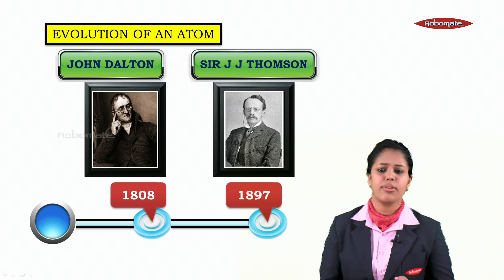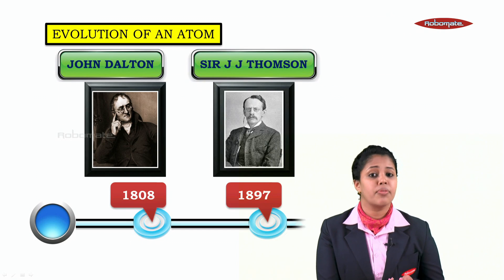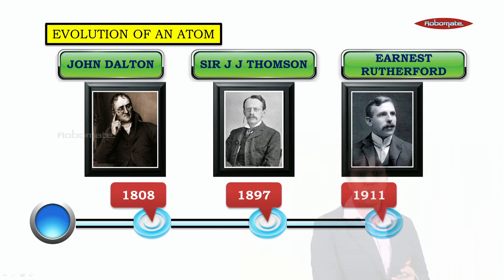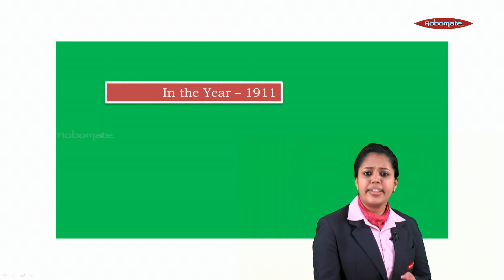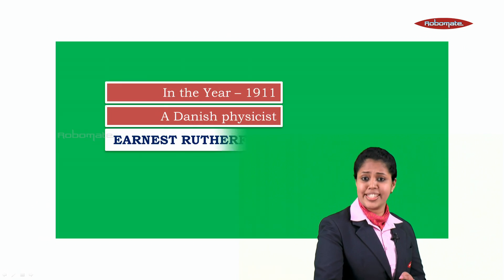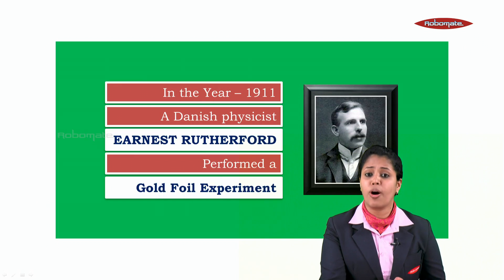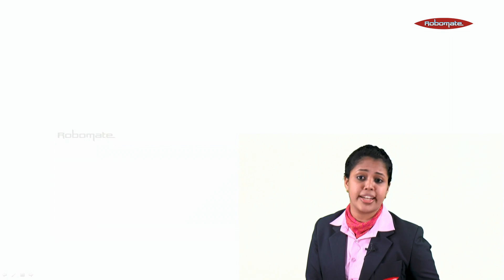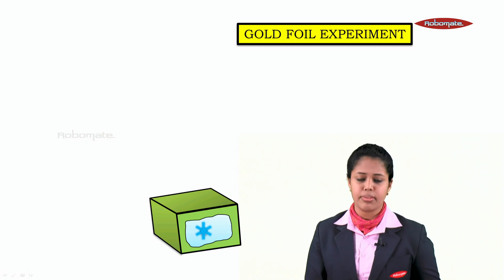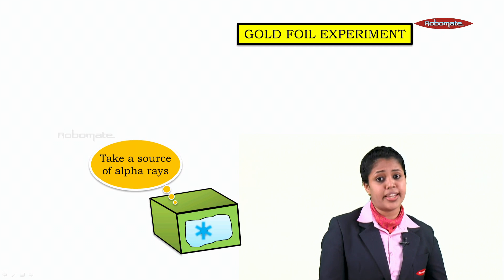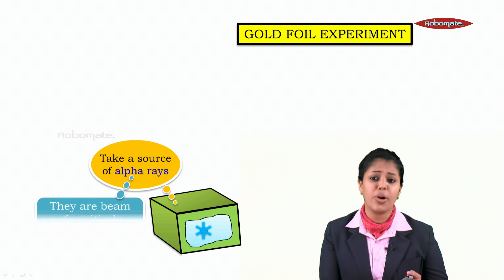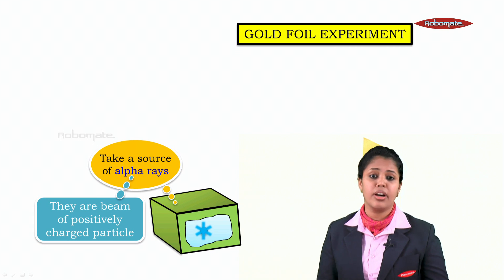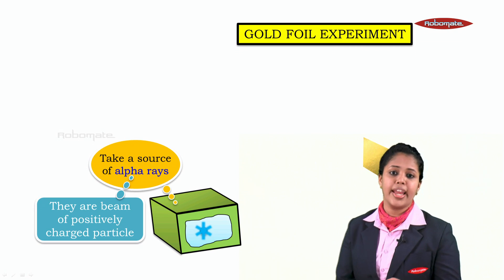Next, in the evolution of an atom, we had in the year 1911 Ernest Rutherford. In the year 1911, a Danish physicist Ernest Rutherford performed the gold foil experiment — a very important experiment in the discovery of an atom. Take a source of alpha rays. Alpha rays are a beam of positively charged particles. In front of the source, place a thin gold foil.